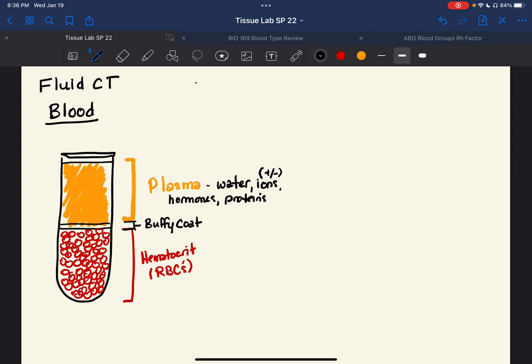What's in the buffy coat is the next heaviest thing. And that's really the white blood cells, which are your immune cells, and platelets for clotting. And then down at the bottom, we're going to have the red blood cells and what's called the hematocrit, which is just the volume percentage of red blood cells that have been spun out by weight in a centrifuge.